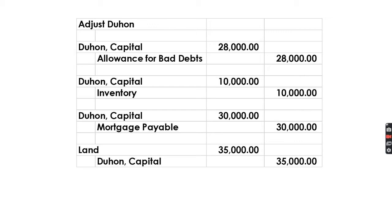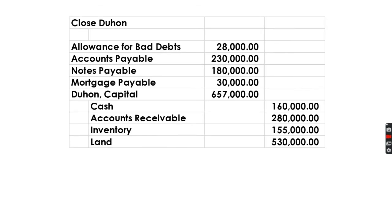The adjusting entries for Duhon are: recognize allowance for bad debts of 28,000 (10% of receivables carrying amount), decrease inventory by 10,000, recognize a mortgage of 30,000, and increase land value by 35,000.